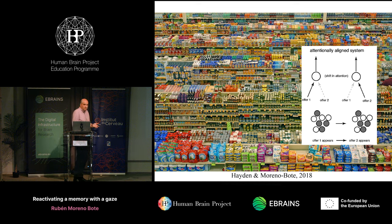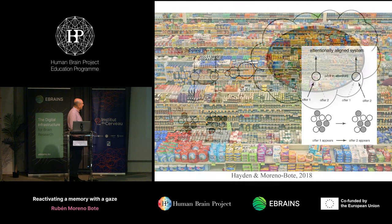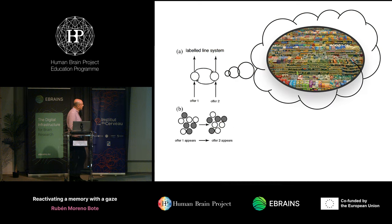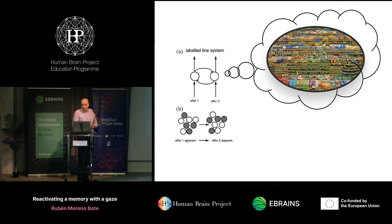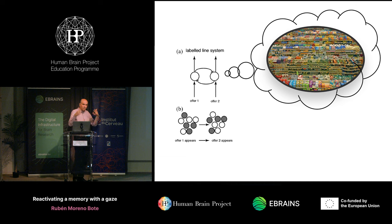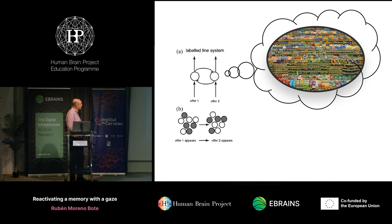But what about abstract decisions? In abstract decisions — like thinking about going to the supermarket — a priori, you don't need to move your eyes to solve the task. You could split your neural resources into non-overlapping neural populations to think simultaneously of several options or alternatives you are interested in for the future.